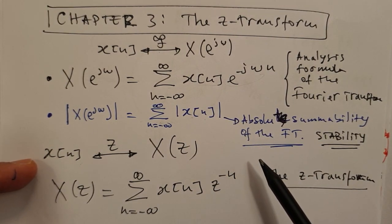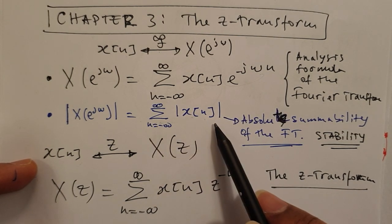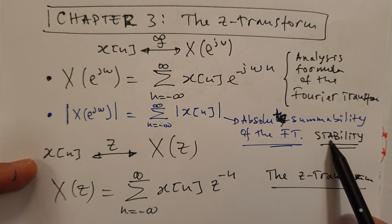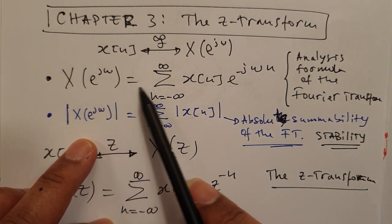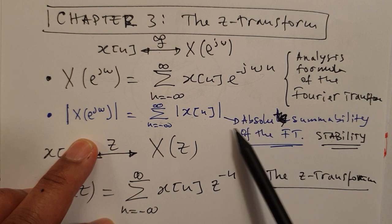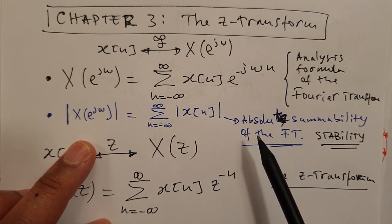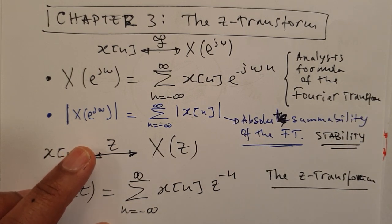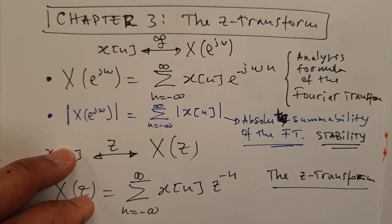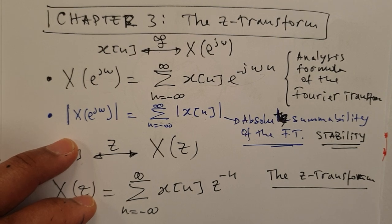This means that if a sequence has a Fourier transform, we can say that sequence will be absolutely summable. In other words, that also means that sequence or system would be stable. So the Fourier transform can be related to the analysis of stability for sequences in general. Whenever we say sequence, we also mean it can be a signal or a system.